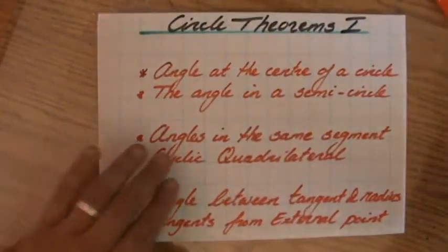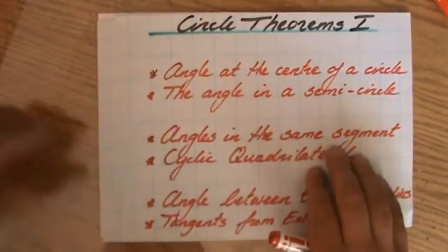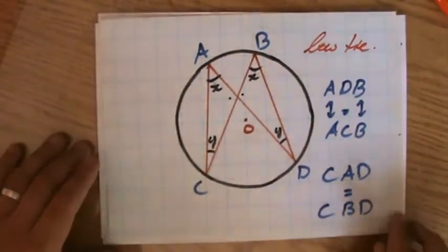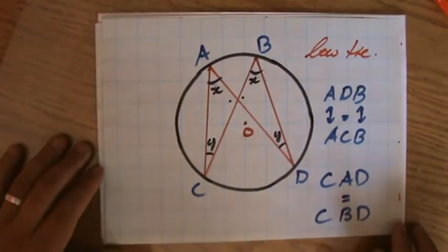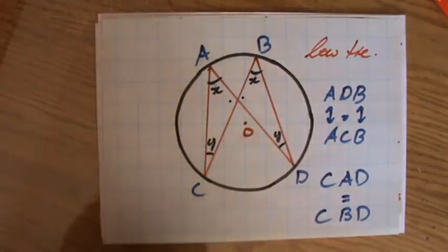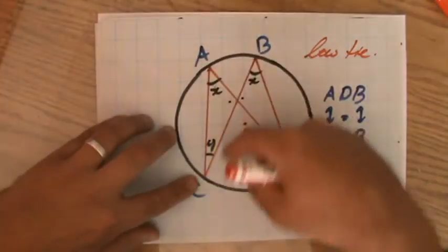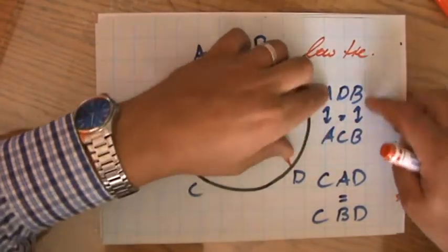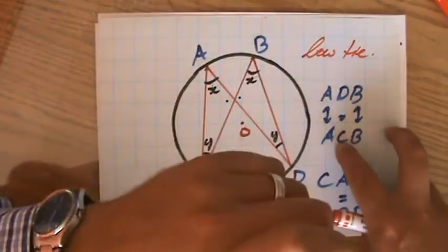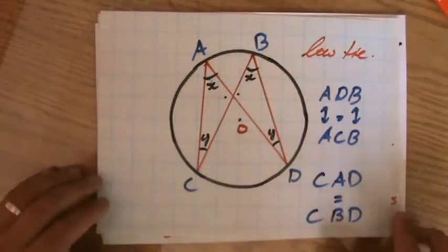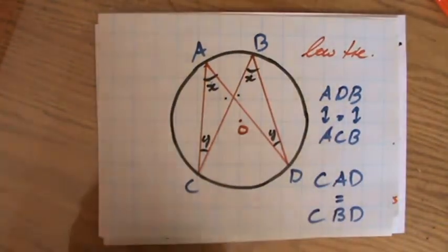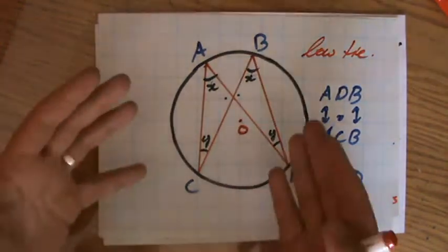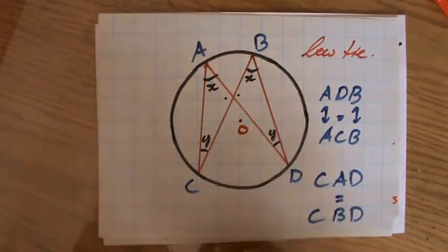The second one we've just done is angles in the same segment, and that one is based upon angles at the center. You're looking for the bow tie. ACB is the same as ADB, as long as those last letters are the same — the angles in the middle at point D and C will be equal. It doesn't have to go through the center anymore; it's a bow tie, clearly — angles in the same segment.